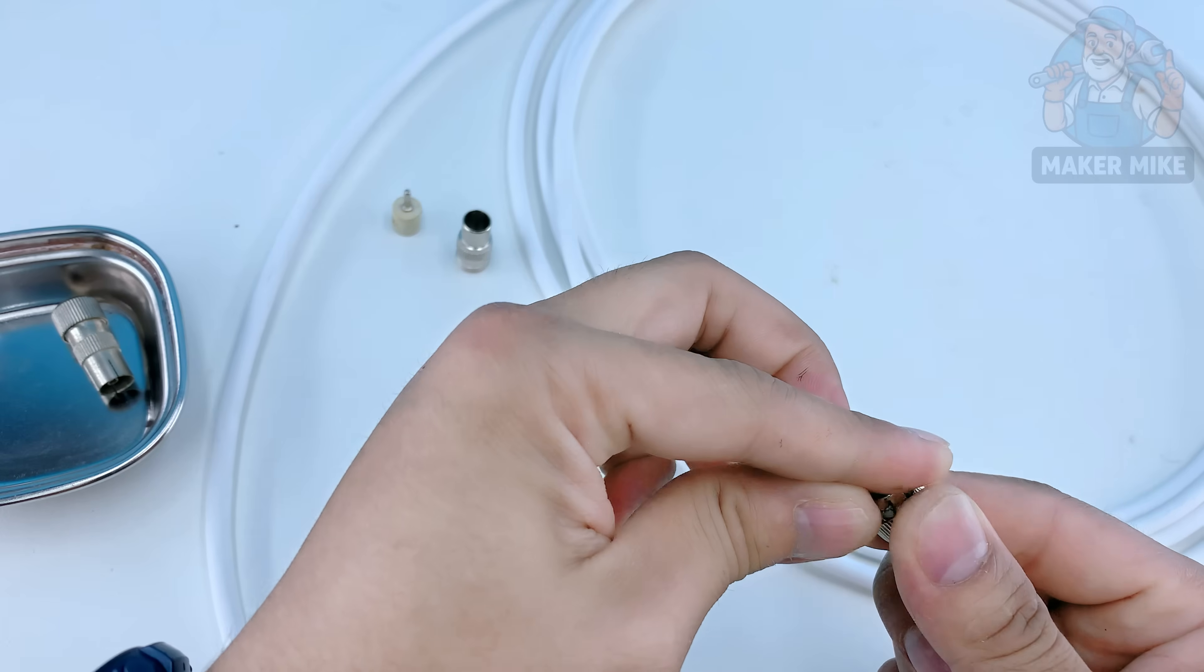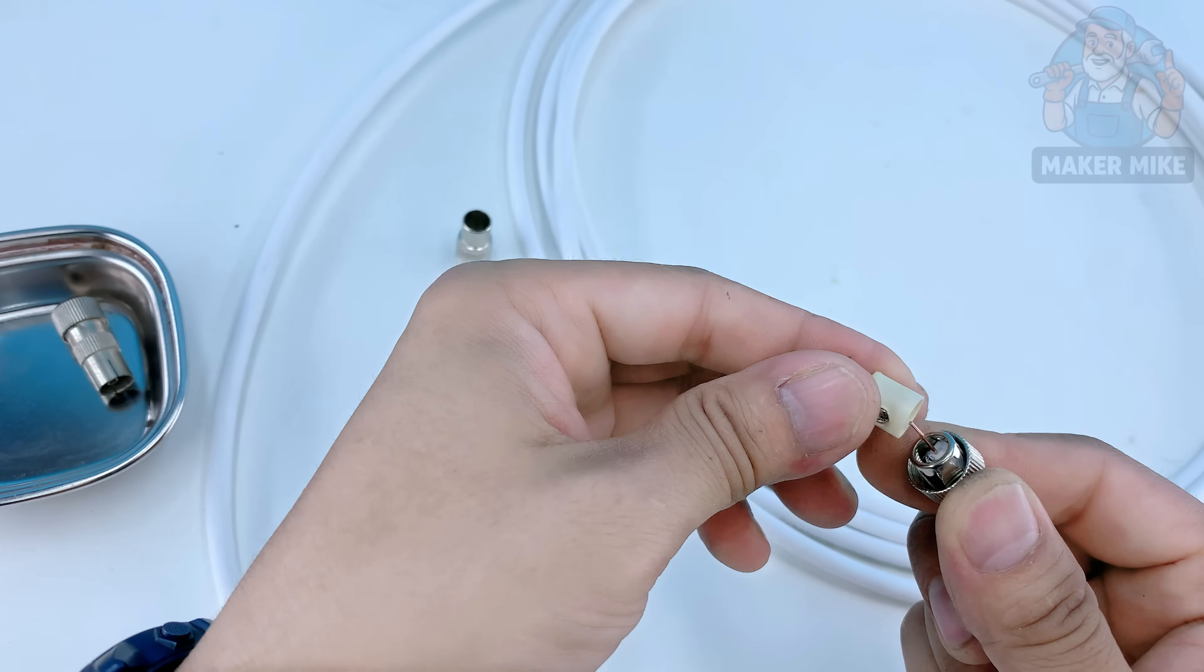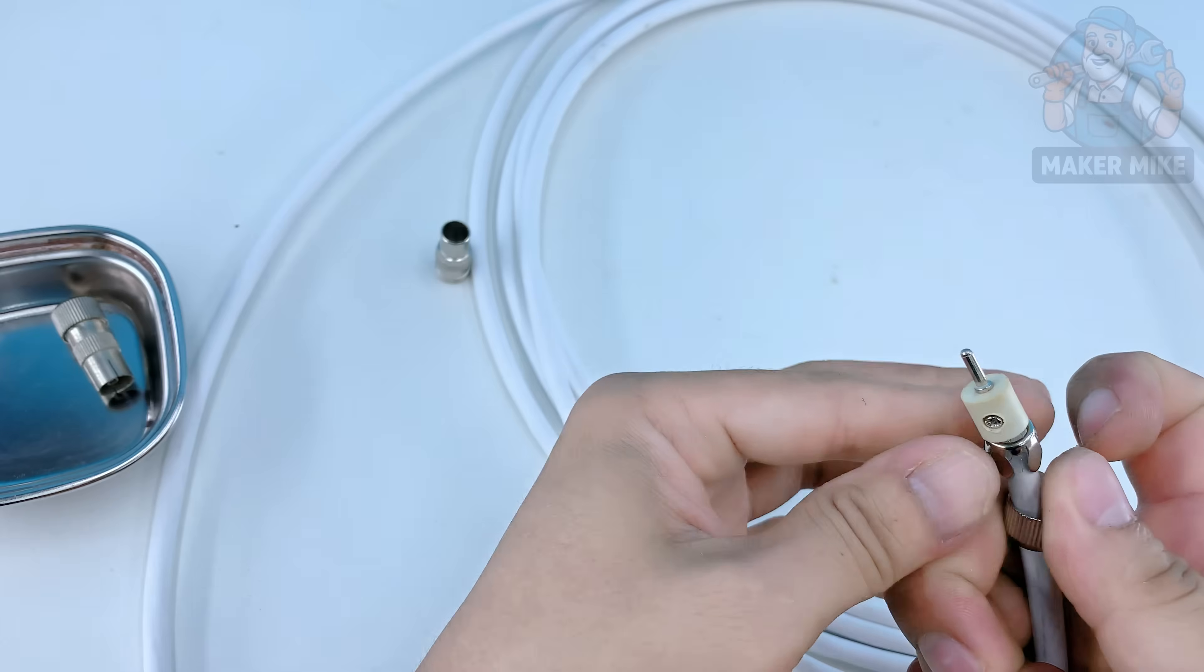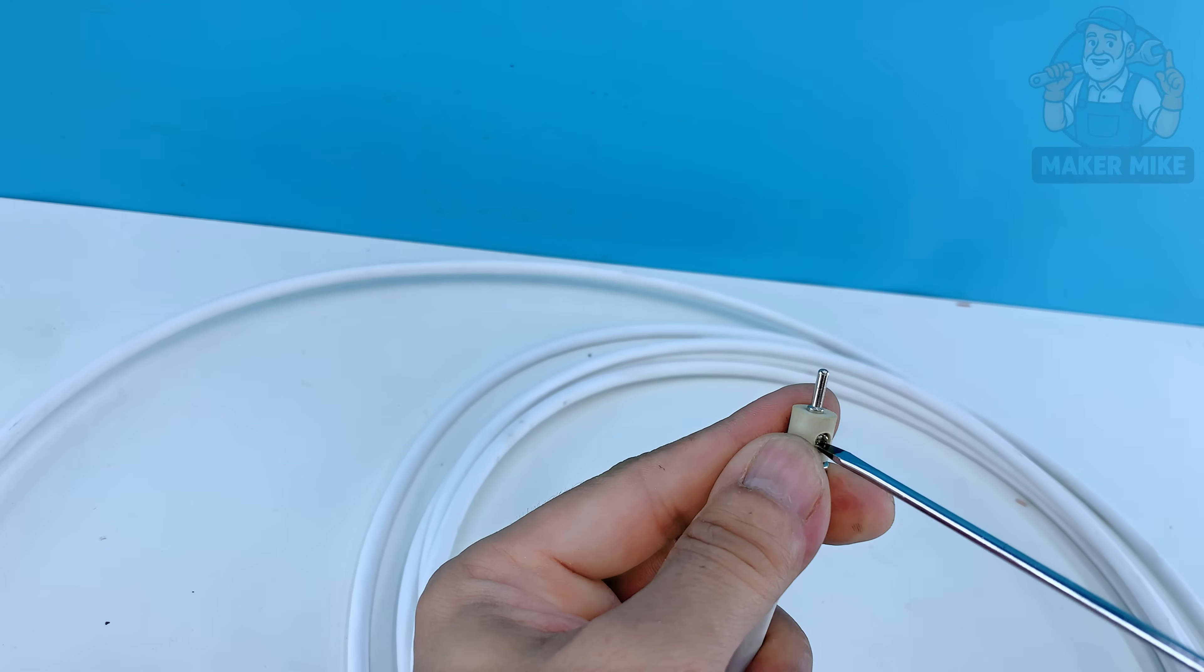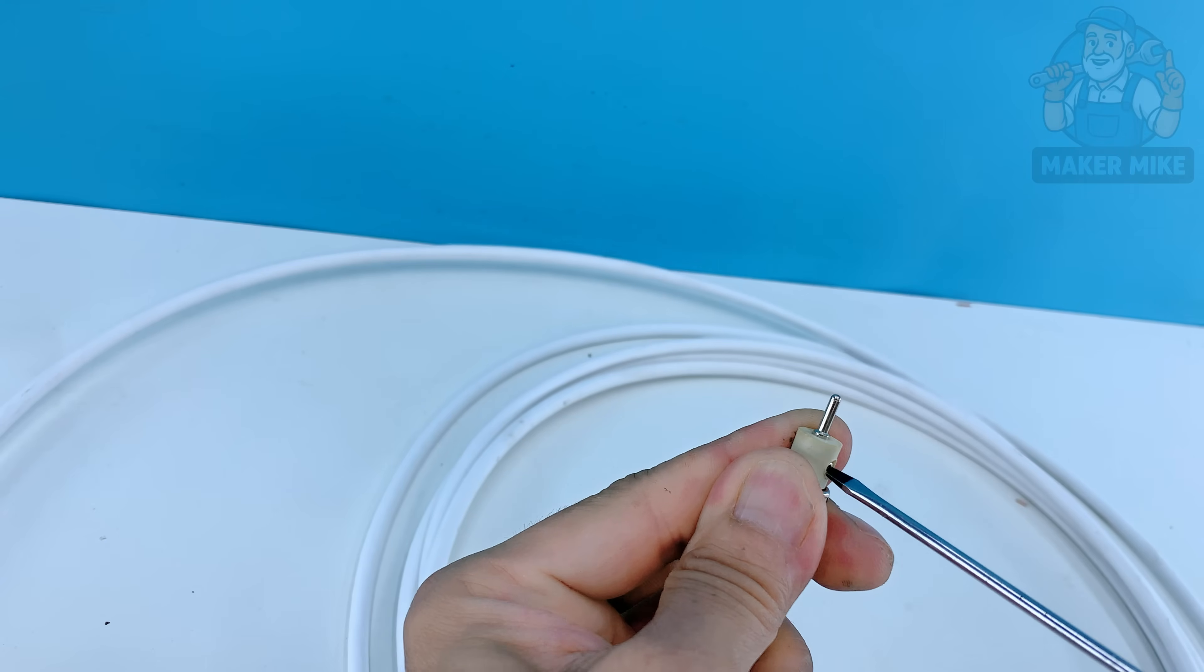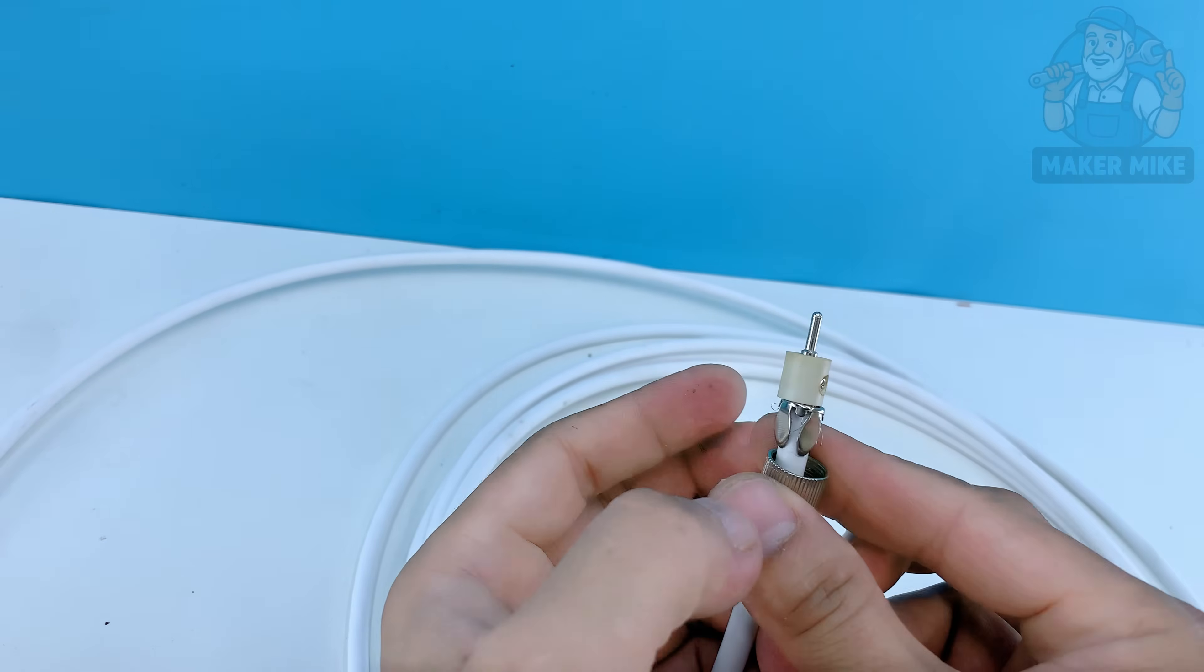When both connectors are on, use one end to plug into your homemade antenna. The other end goes into your TV's antenna input. This simple step gives you the flexibility to position your antenna anywhere, maybe near a window or higher up on a shelf to catch the best signal.